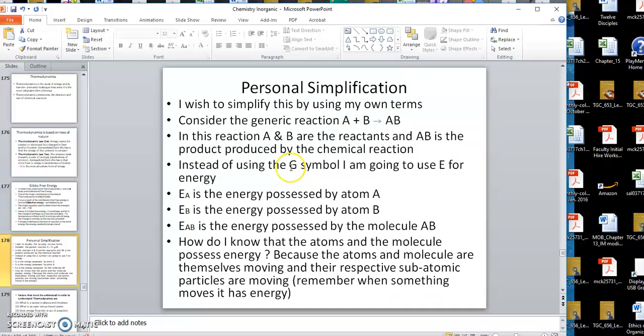I'm not going to use the symbol G for Gibbs free energy. I'm going to make it very simple. I'm going to say that the E_A, this is my own symbology, the E_A is the energy possessed by atom A. E_B is the energy possessed by atom B. E_AB is the energy possessed by molecule AB. How do we know these atoms have energy? Because we have the movement, the neutrons, the electrons, the protons, and so forth.